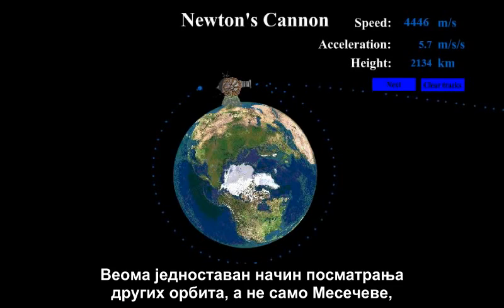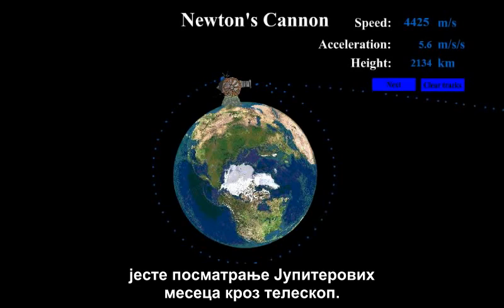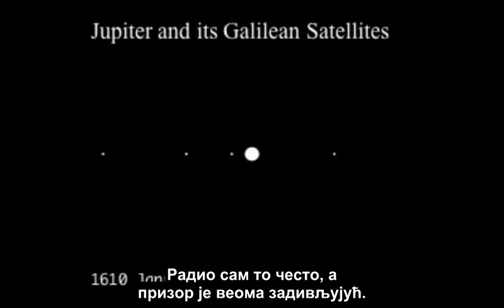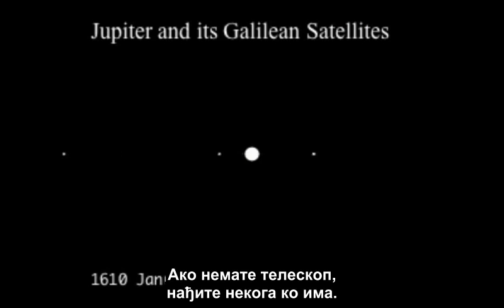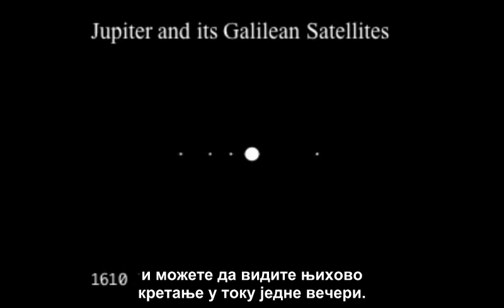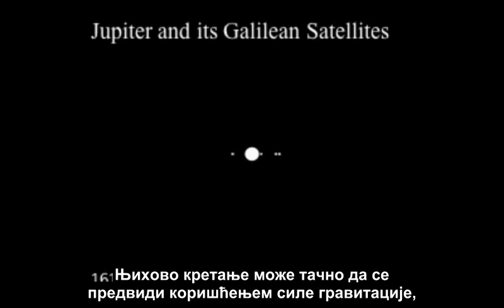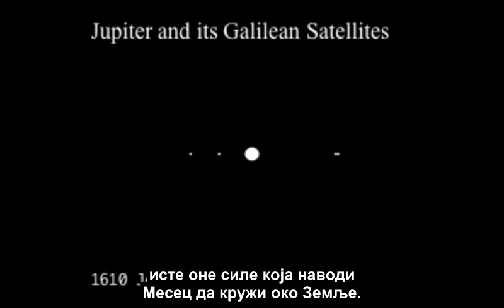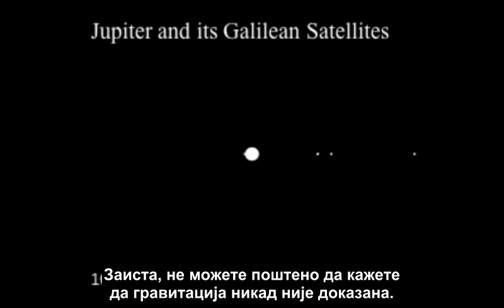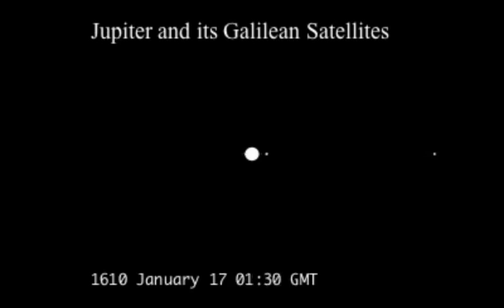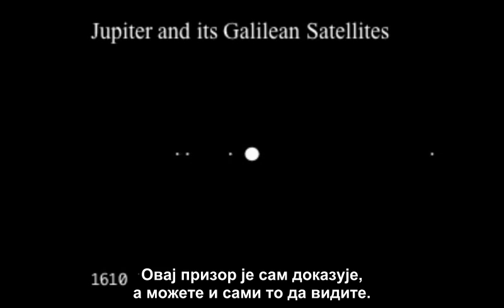A very easy way to observe orbits, other than our own moon, is to look at the moons of Jupiter through a telescope. The four biggest moons of Jupiter orbit the planet in a short amount of time, and you can actually see their movements within a single night. Their movements are exactly predicted by the force of gravity — the same force that keeps our moon in orbit around the Earth. You really cannot honestly say gravity has never been proven. This sight alone proves it, and you can see it for yourself.